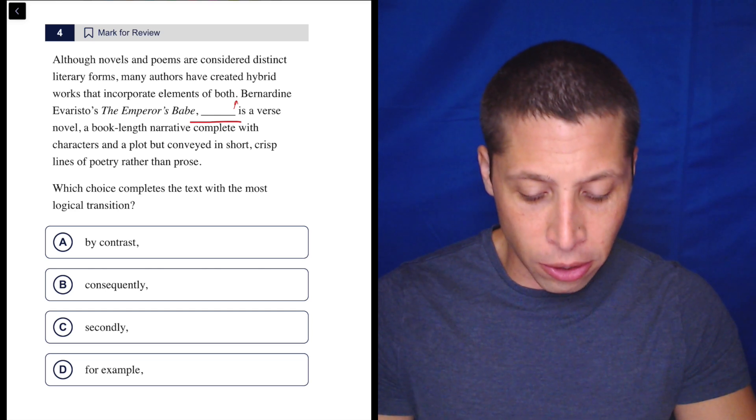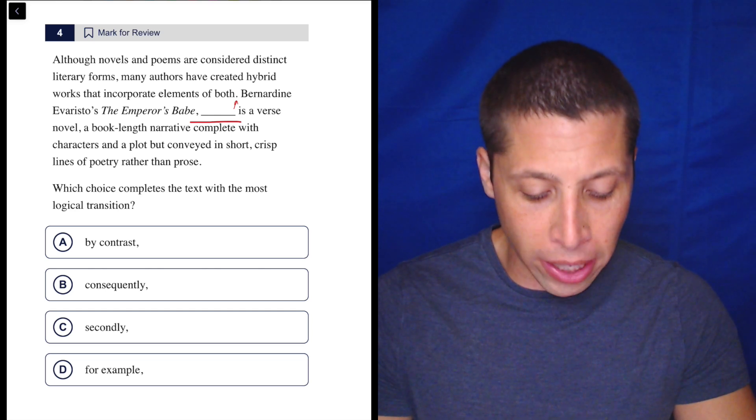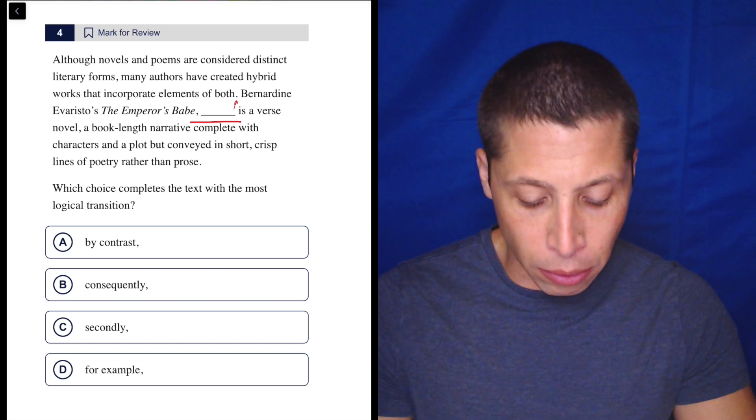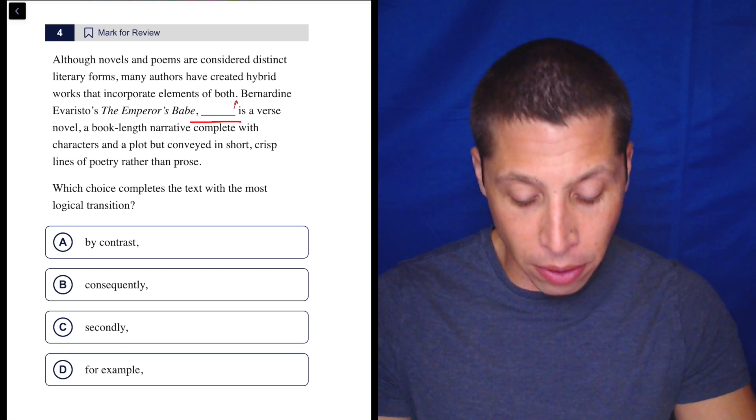Although novels and poems are considered distinct literary forms, many authors have created hybrid works that incorporate elements of both. Bernardine Evaristo's The Emperor's Babe is a verse novel—a book-length narrative complete with characters and a plot but conveyed in short, crisp lines of poetry rather than prose.